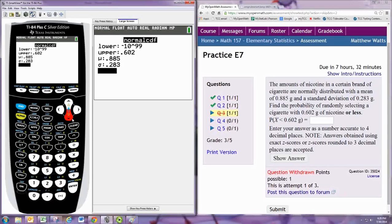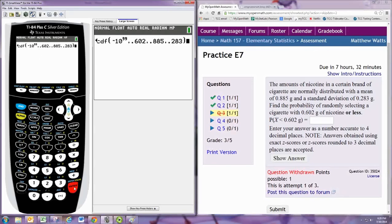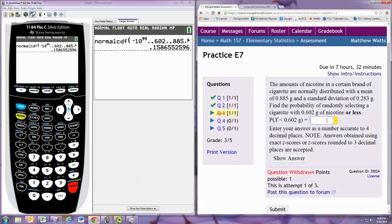And paste. So four decimal places is 0.1587.